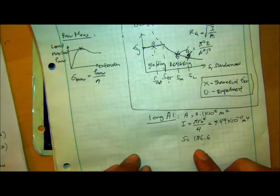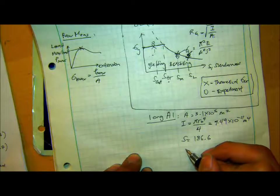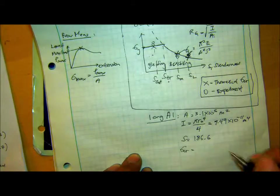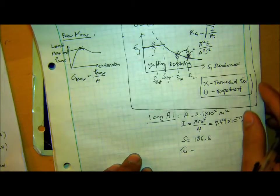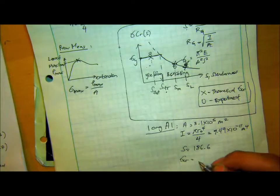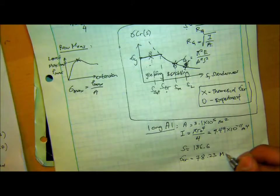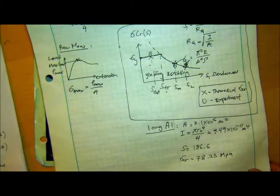So now I can also calculate the sigma critical using equation 2.6. And that gives us 78.23 megapascals.